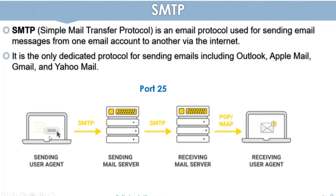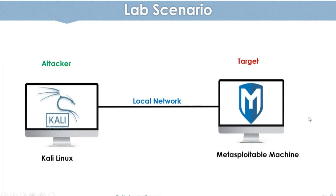جو sender ہے وہ email send کرتا ہے — through SMTP — جو sender کا email server ہے، جیسے Gmail، وہاں جاتی ہے۔ Gmail کا server SMTP use کرتے ہوئے receiver کے mail server سے connect کرتا ہے، چاہے وہ Yahoo ہو یا Outlook۔ Receiver کے mail server پر email پہنچتی ہے اور پھر receiver کے پاس normally POP یا IMAP — جو different protocol ہیں — کے ذریعے receive ہوتی ہے۔ SMTP صرف mail send کرنے کے لیے use ہوتا ہے۔